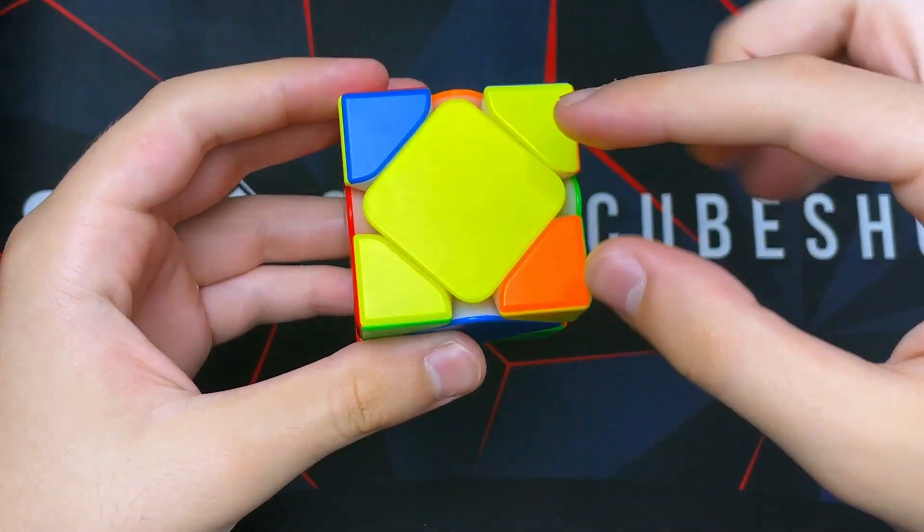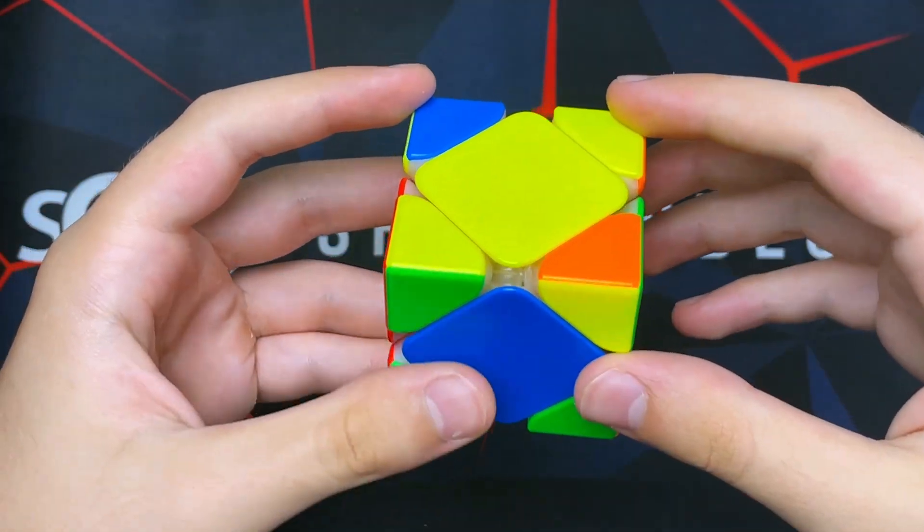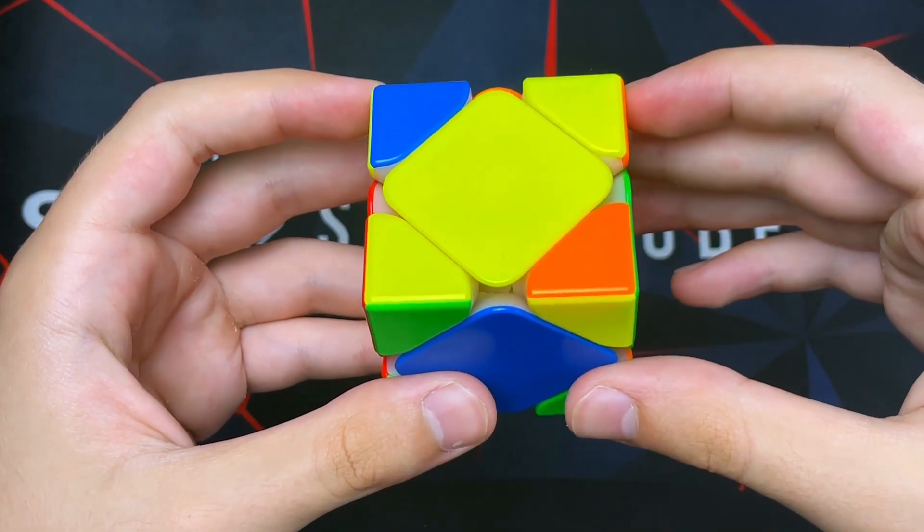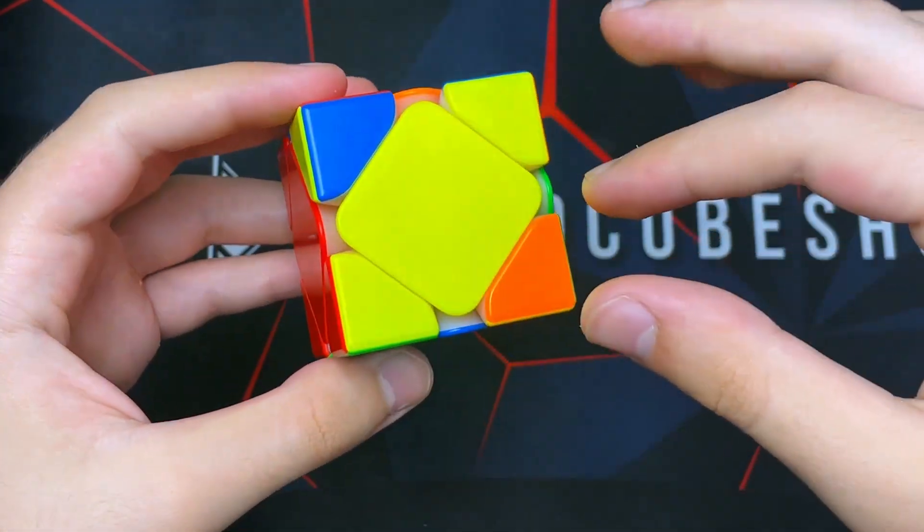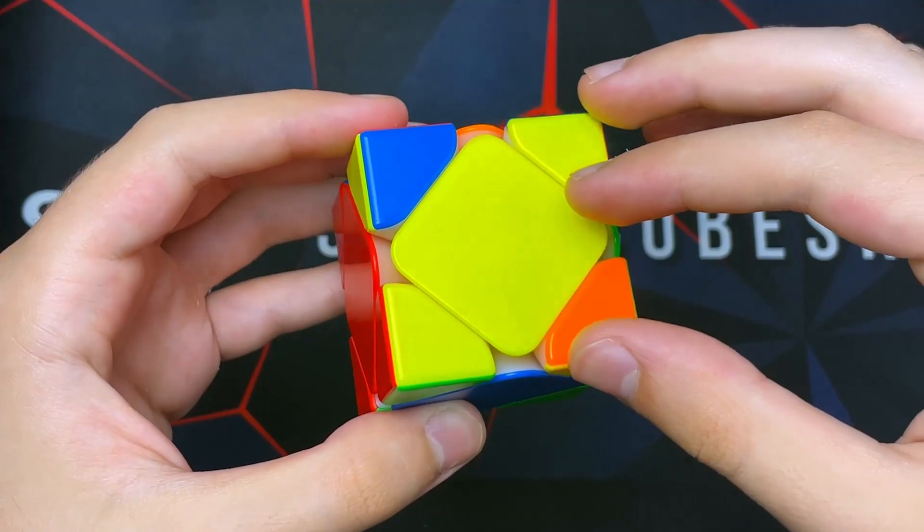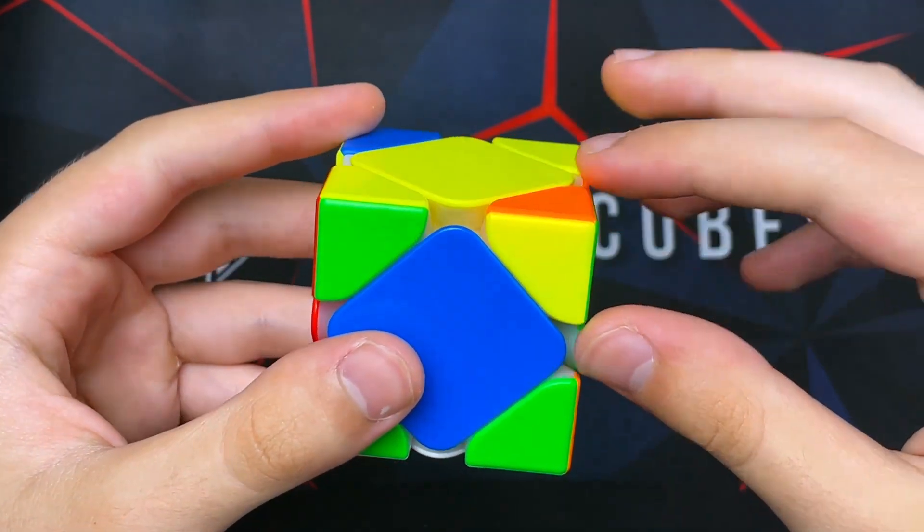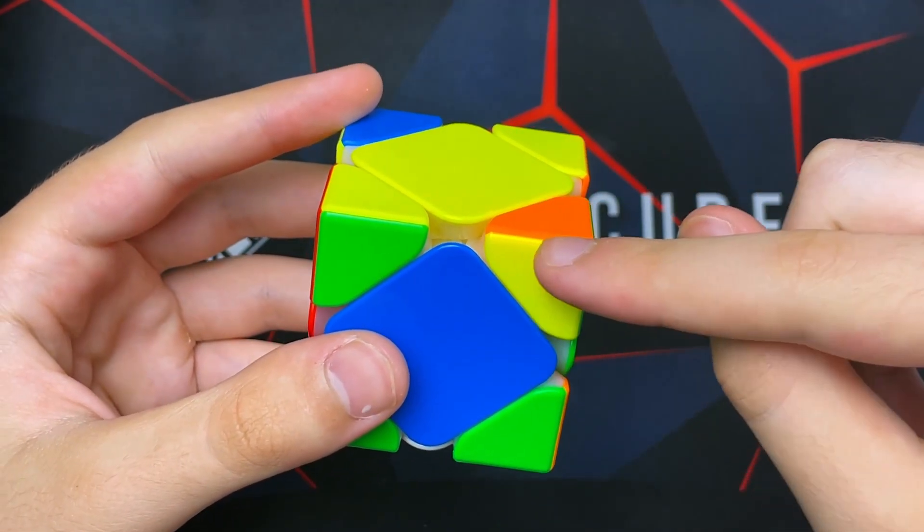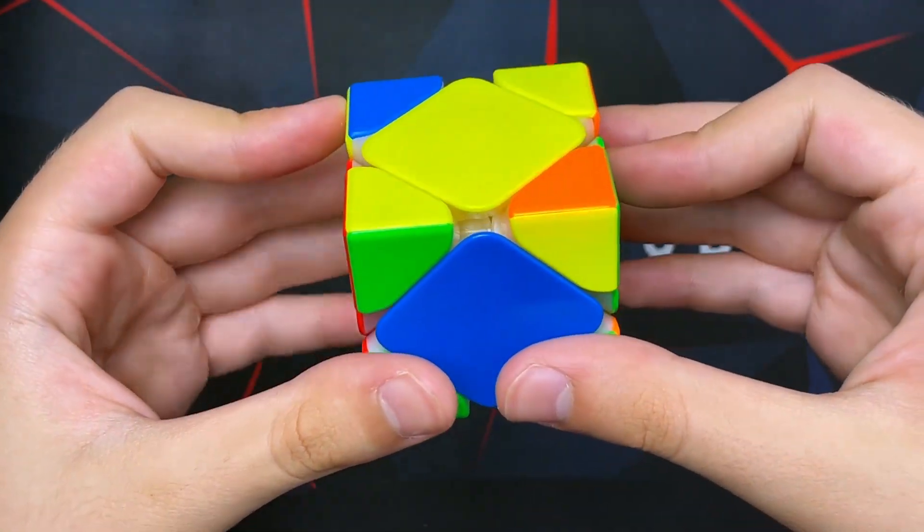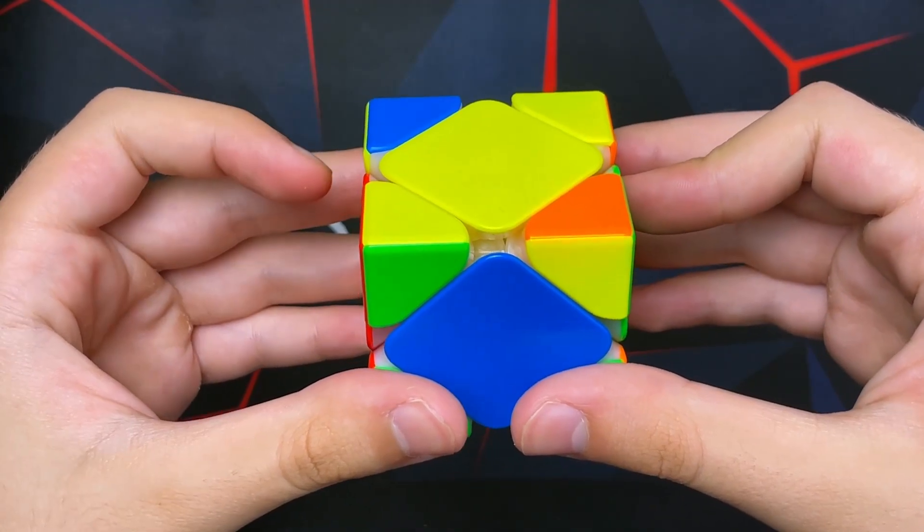We want to solve the yellow corner. So there are essentially three cases you can get. One of them is where it's diagonal like this, the other one is where essentially none of them are solved, and the last one is when all of them are solved. For this case, what we have to do is hold this solved one on the right facing us, and then do our first algorithm. This is the only algorithm you'll ever need for solving a Skewb.